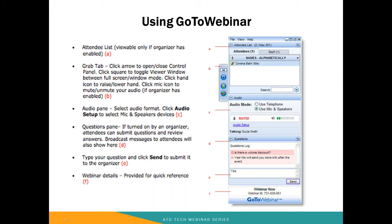I am going to take a moment to go over the GoToWebinar technology. Right now you should see the control panel pictured on your screen. If you do not, it may be minimized and you can pull it out by going to the grab tab, which is item B shown here. This hides and shows the control panel. There is also an attendee list, item A, where you can see all of the participants on the call.